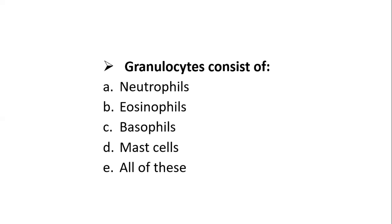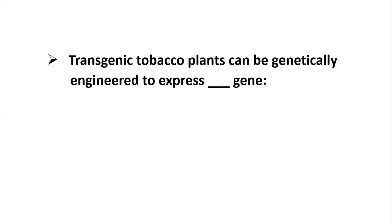Granulocytes consist of neutrophils, eosinophils, basophils, mast cells, and all of these. The correct answer is all of these. Transgenic tobacco plants can be genetically engineered to express which gene? The answer is the BT toxin gene.